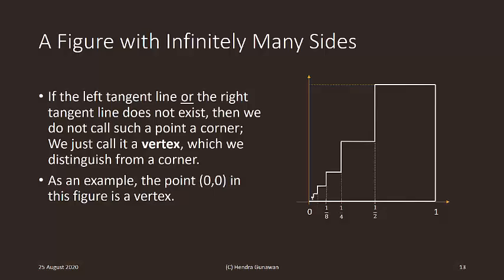If the left tangent line or the right tangent line does not exist, then we do not call such a point a corner. We just call it a vertex which we distinguish from a corner. As an example, the origin in the figure beside is a vertex.